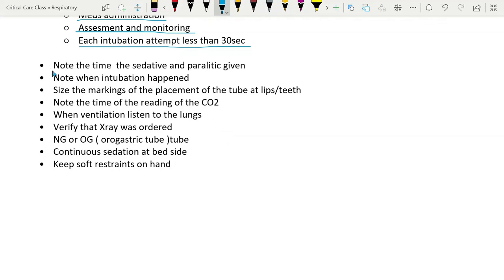Nurse should note the time the sedative and paralytic was given. Note when intubation happened. Size the marking of the placement on the tube. Note the time of the reading of the CO2. Listen to the lungs. Verify that x-ray was ordered. Place a nasogastric or orogastric tube to avoid vomiting with intubation. Keep soft restraints on hand.